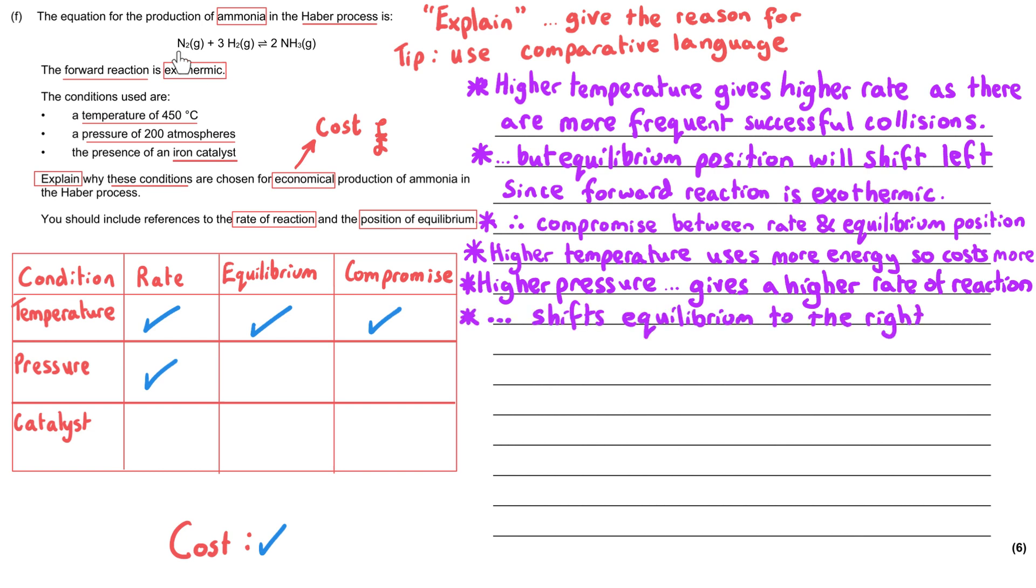Now the equilibrium position will be the opposite, and that's because there are four molecules on the left-hand side of the equation but only two on the right-hand side of the equation.